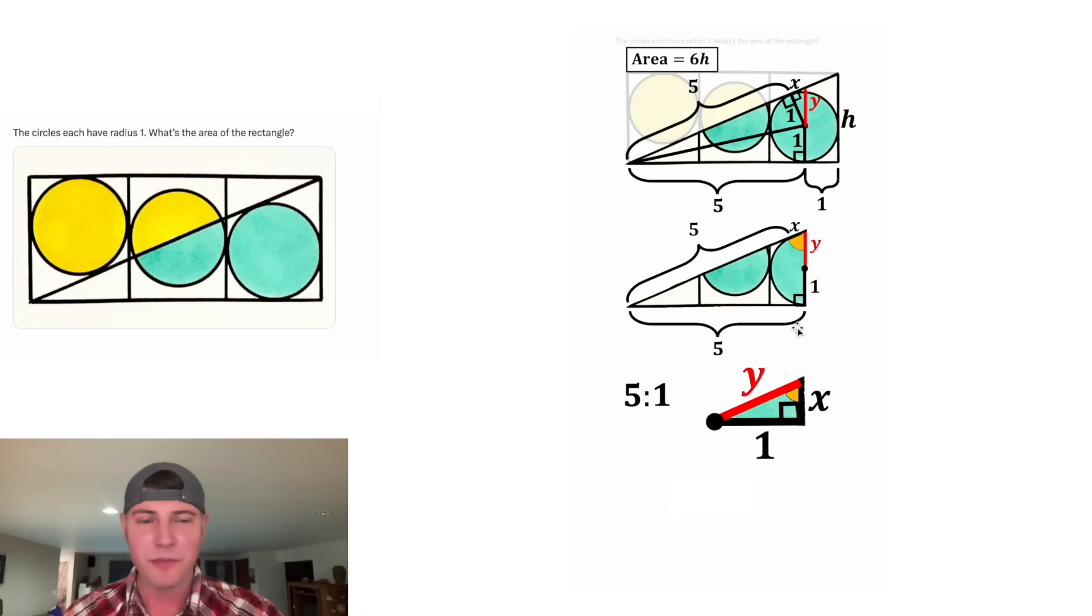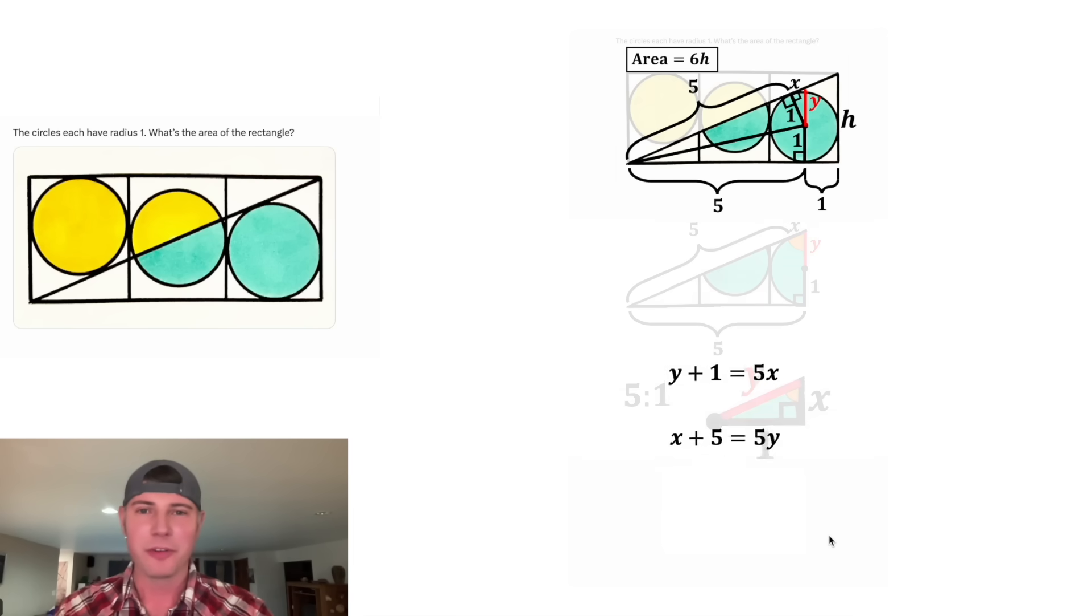With this information, we can write some equations. Since this base is five times this base, this height y plus one will be five times this height x. So we can write y plus one is equal to five x. And the same thing will happen with the hypotenuse. This x plus five is going to be five times this y. So we can write x plus five equals five y. These two equations come from the fact that these two triangles are similar with a similarity ratio of five to one. And now we have a system of two linear equations with two variables. We are able to solve for those variables.